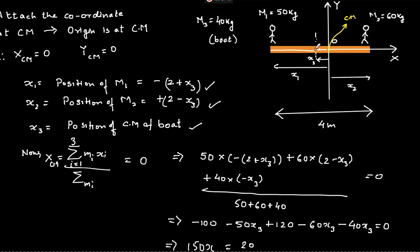Point P (the original boat center) must have traveled to point O (the original system CM location), so that the center of mass is maintained. The boat must shift by x3 in the second case to keep the center of mass at the same location. Therefore, the answer is x3 = 2/15 meters towards the right.